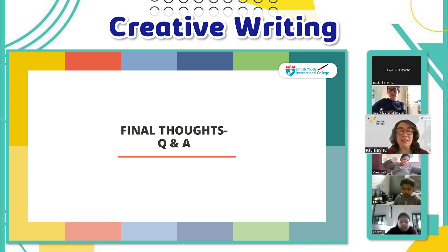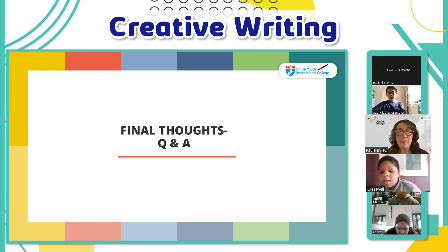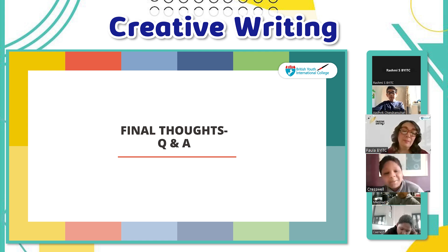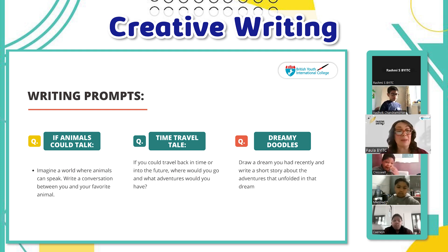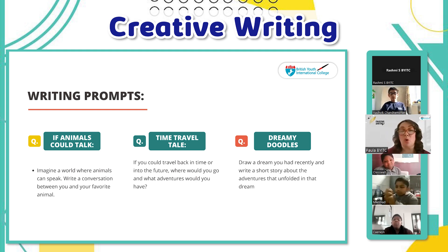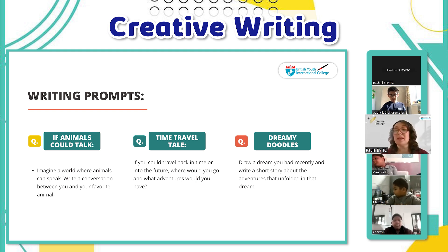Treswell, give me some more details. Very well done, by the way. I was thinking, because we've got the owl, we should have got a whale, a lion — because that would be alliteration. All your own ideas. You could write a story about: imagine a world where animals can speak — write a conversation between you and your favourite animal. Or if you could travel back in time or into the future, where would you go and what adventures would you have? Or draw a dream you had recently and write a short story about the adventures that unfolded.